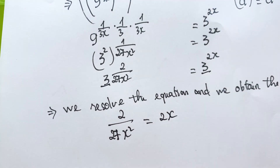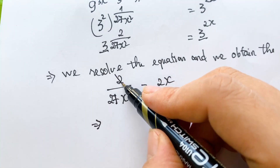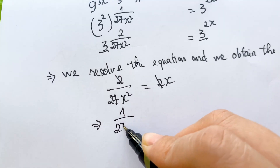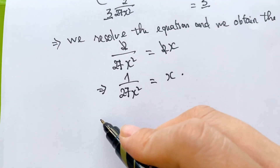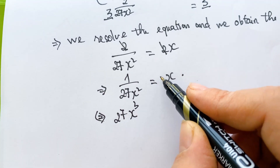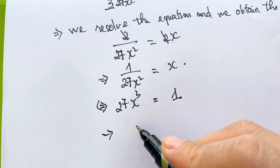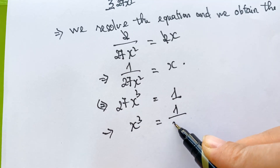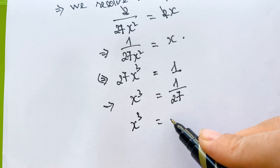For this step, divide both sides by two, so we have one over twenty-seven x squared equals x. This gives x equals zero, or twenty-seven x cubed equals one. Then the value of x squared is equal to one over twenty-seven x, so we can rewrite x squared equal to one over twenty-seven x.